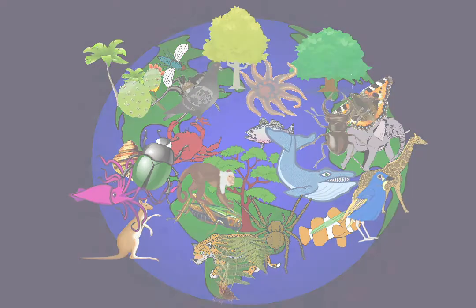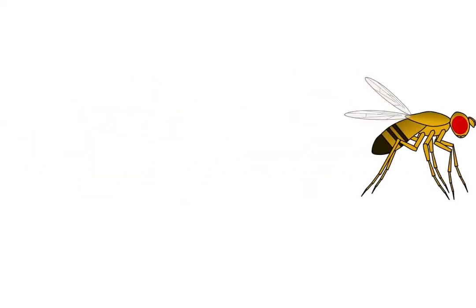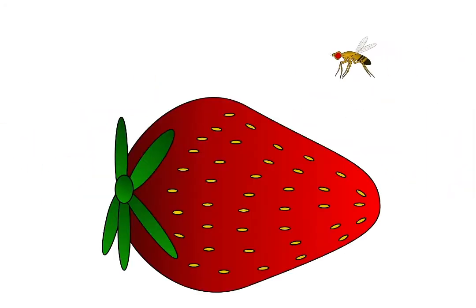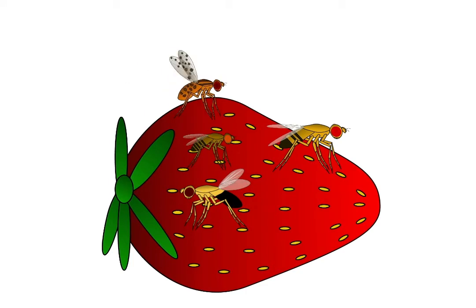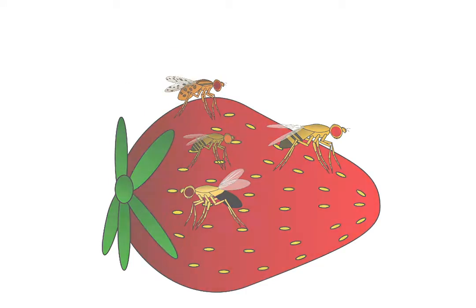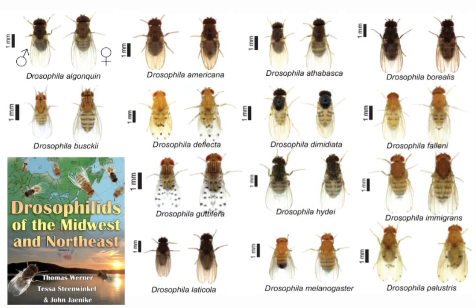Consider a fruit fly. There are thousands of species of fruit flies, and with the naked eye, it might seem like they all look the same. But let's take a closer look — there are actually some striking differences among these small insects. Species of fruit flies differ in their size and coloration. For example, many of the species shown here have a brown body, whereas others are yellow or black.